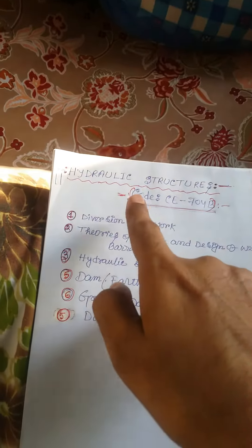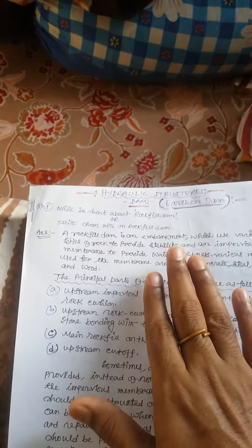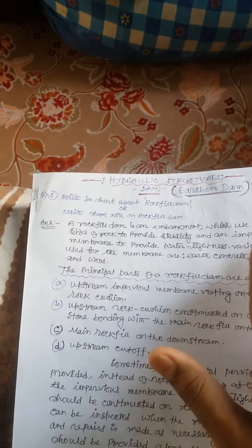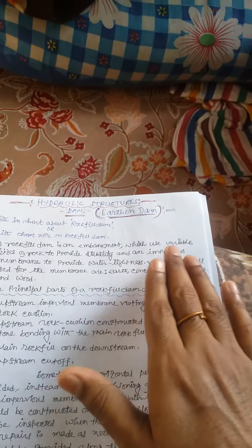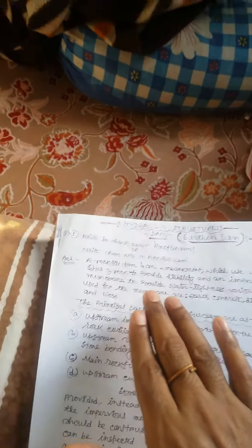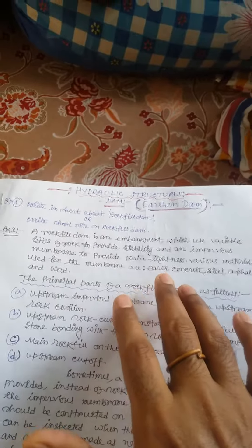The subject is hydraulic structures, code CE 704B, module 5: earthen dam — specifically rock fill dam. A rock fill dam is an embankment which uses variable sizes of rock to provide stability, and an impervious membrane to provide water tightness. Various materials used for the membrane are concrete, steel, asphalt, and wood.